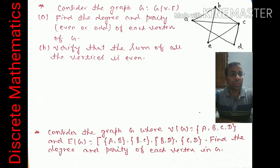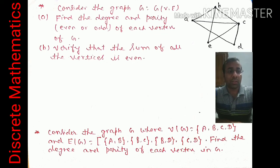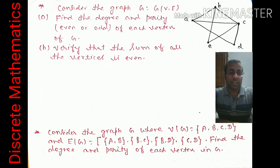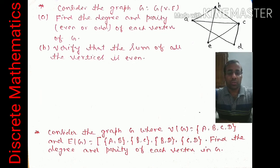Based on these concepts, consider graph G = (V, E). Find the degree and parity (even or odd) of each vertex A, B, C, D, E, and verify that the sum of all vertex degrees is even — confirming our theorem. Second question: G where V(G) = {A, B, C, D} and E(G) = {(A,B), (B,C), (B,D), (C,D)}. Find the degree and parity of each vertex. Solve these two questions by yourself.